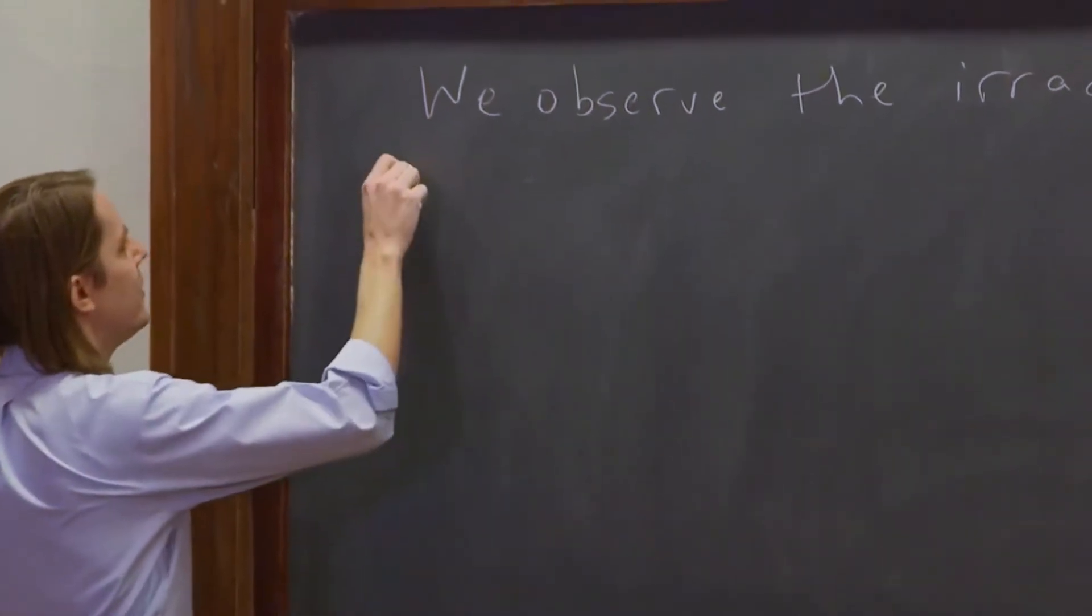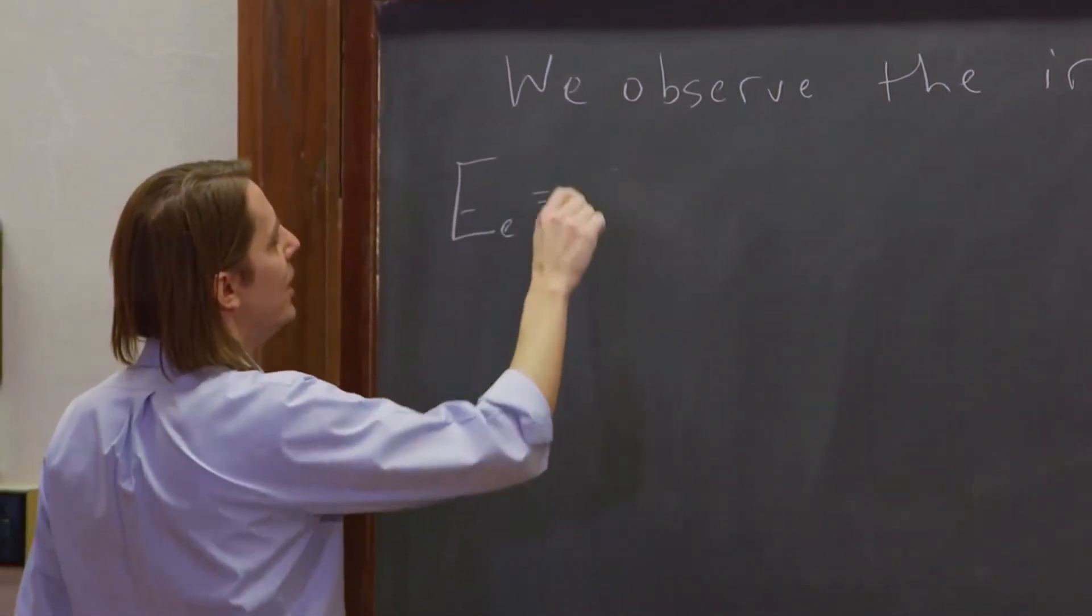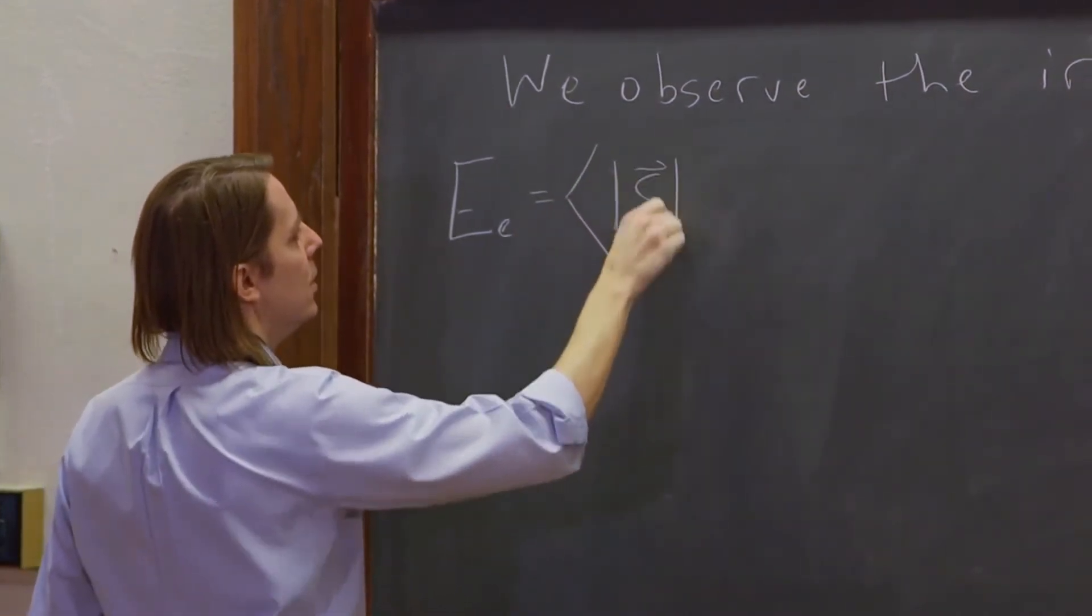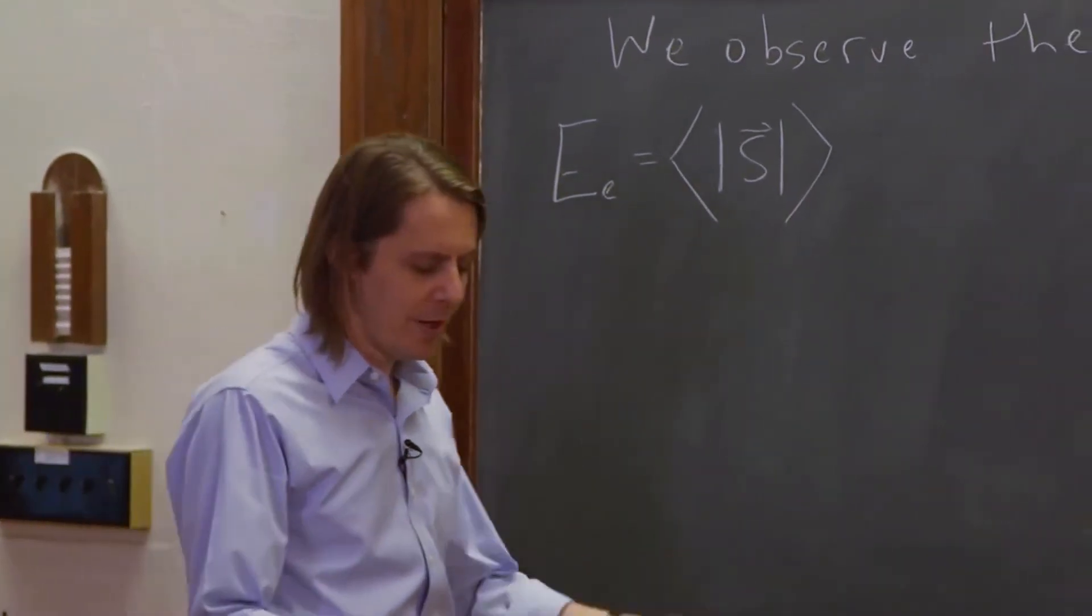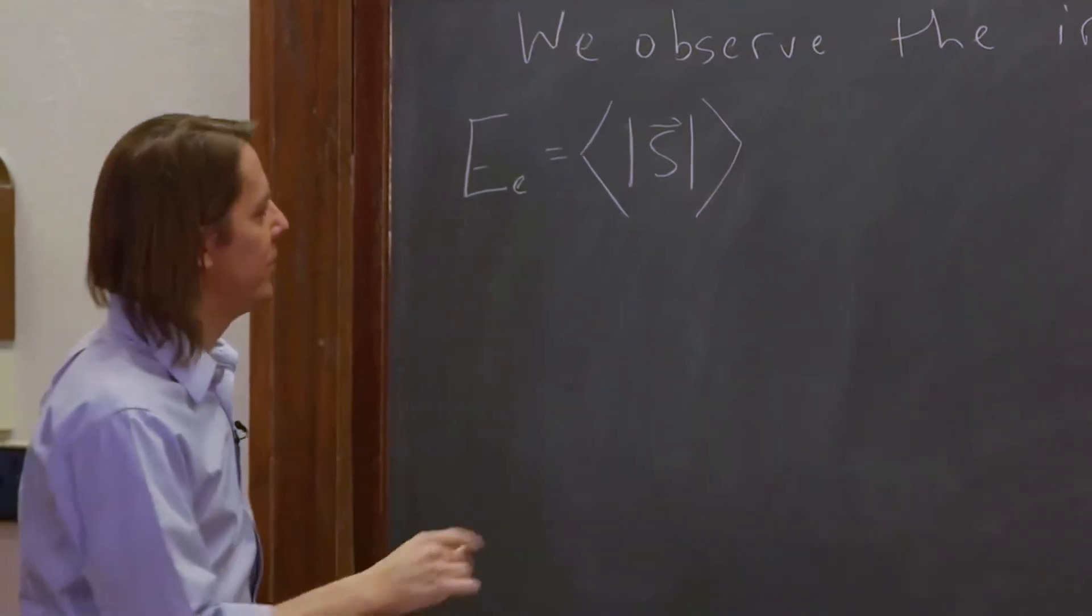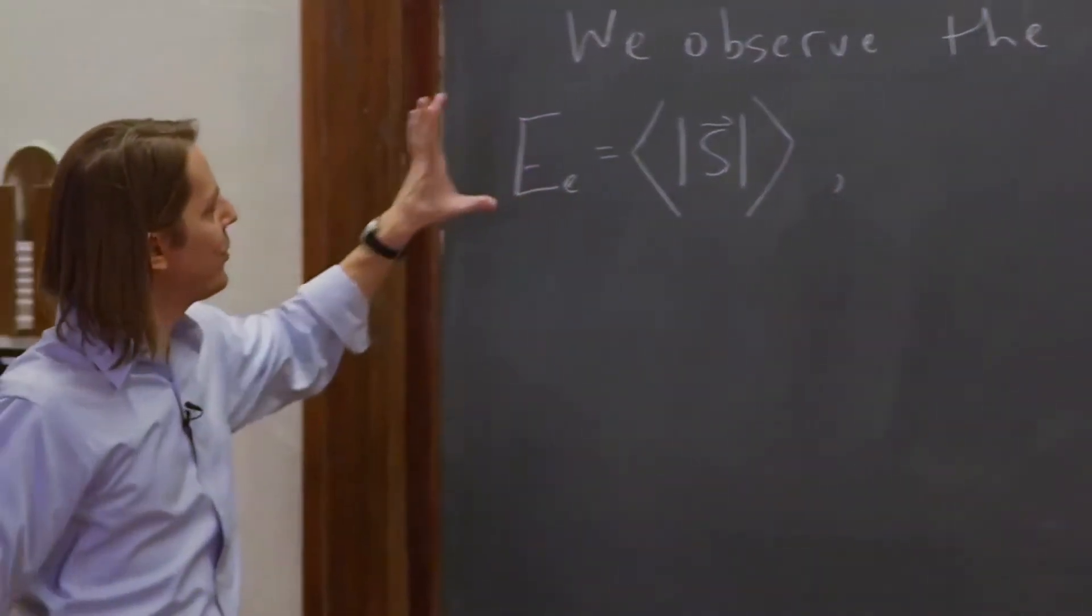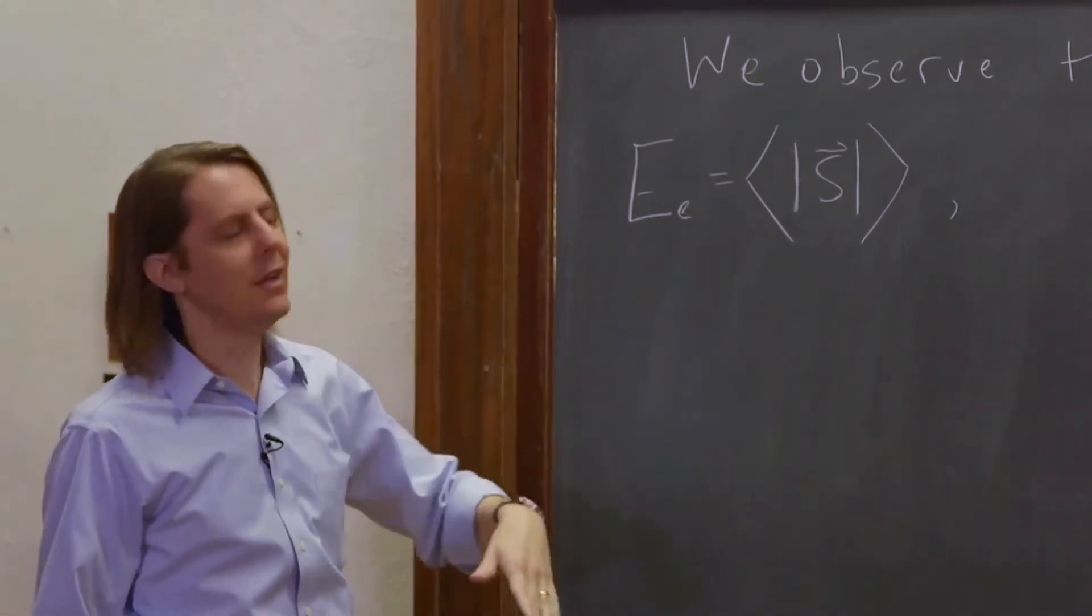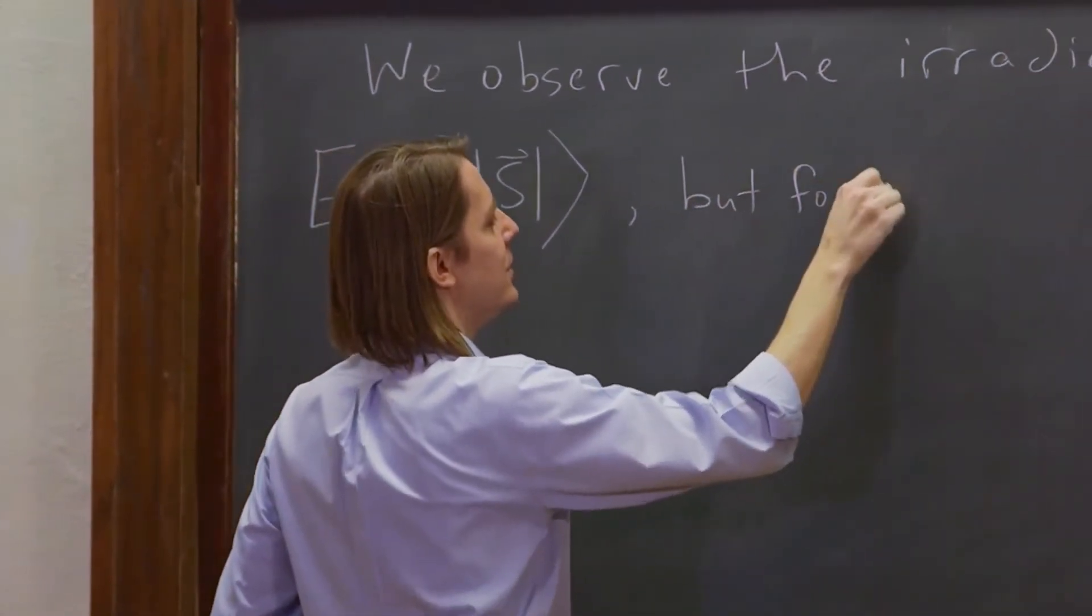So let's recall the irradiance. It was E_E, was the symbol, the proper symbol. And it was the time average of the magnitude of the pointing vector. And I told you that it's proper to label irradiance E_E because I is for other things, like intensity. But for now, we're going to call it I because it just gets too confusing.